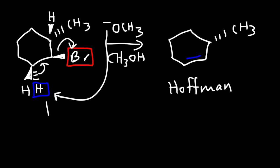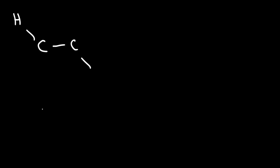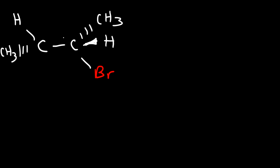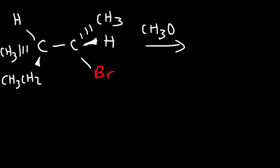When dealing with the E2 reaction, the hydrogen and the leaving group have to be anti with respect to each other — they have to be on opposite sides. Now let's consider another example where the hydrogen and the bromine atom are anti to each other, 180 degrees apart. Let's react this particular stereoisomer with methoxide and draw the elimination product that will form.